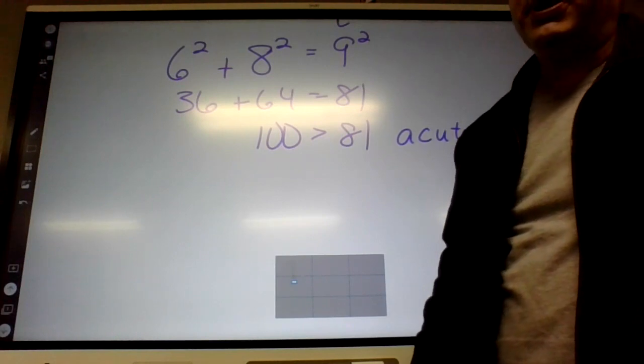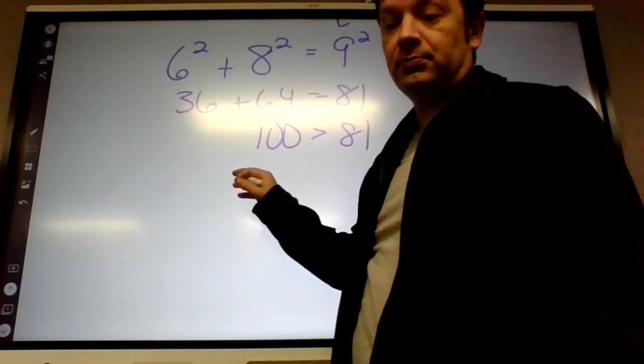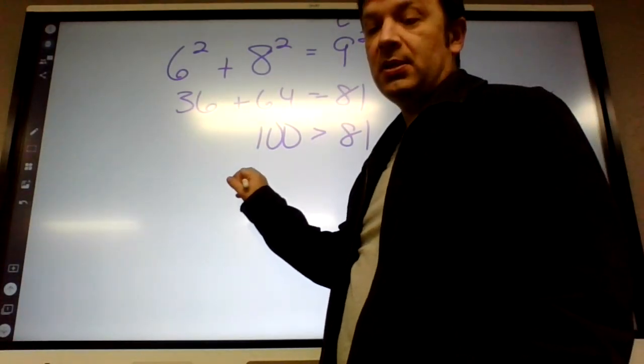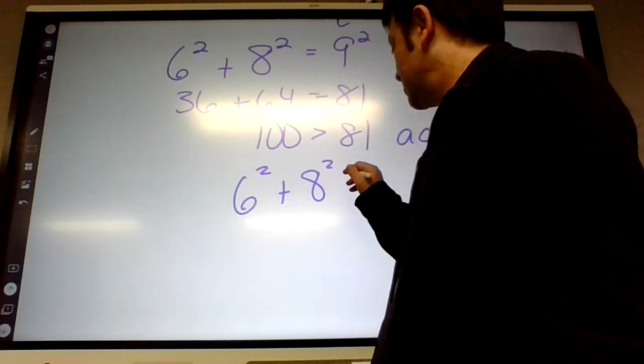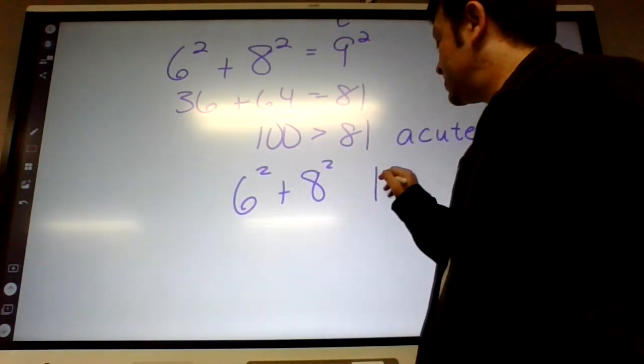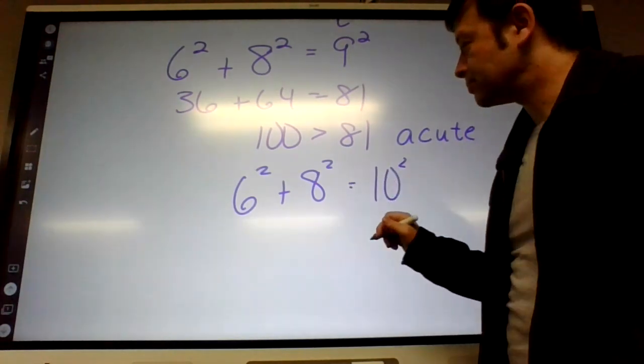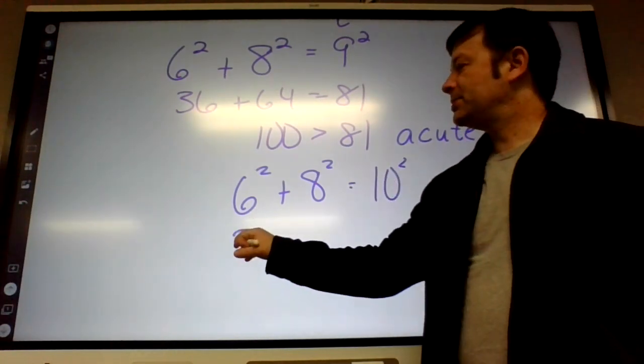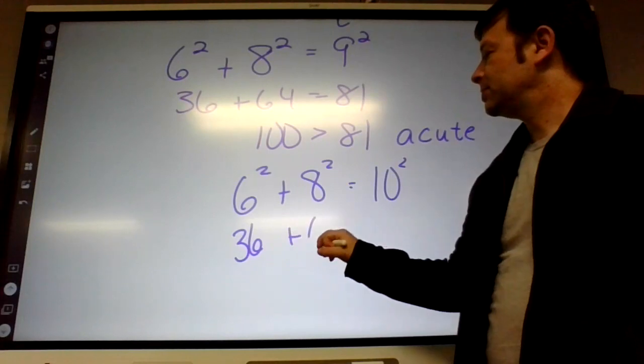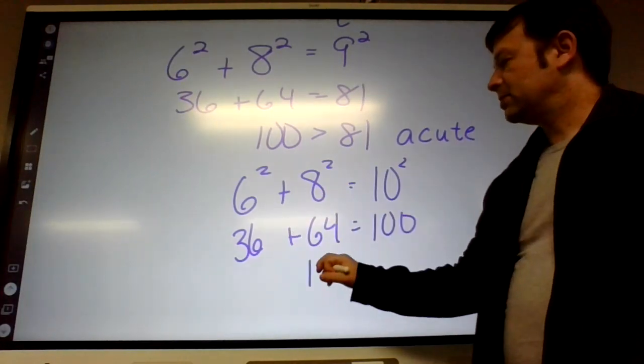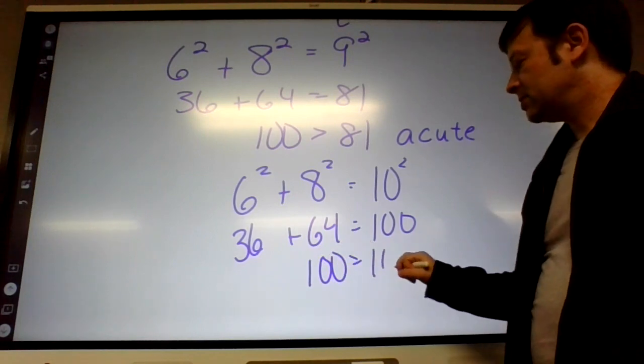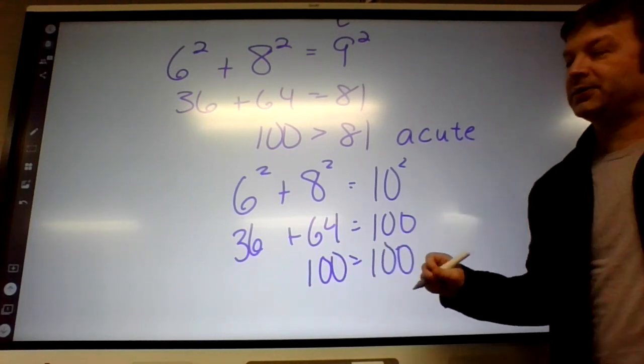All right, so on three, how would we set that one up? Three, right, it's the same thing. Six squared plus eight... Oh, I kind of accidentally set that one. Does six squared plus eight squared equal ten squared? Well, these are actually the same numbers over here. It does, because it's a six, eight, ten. I kind of accidentally set that one.